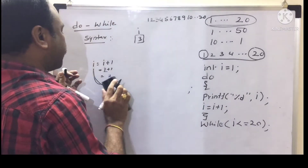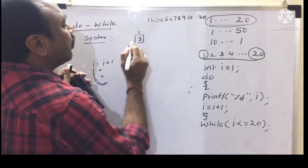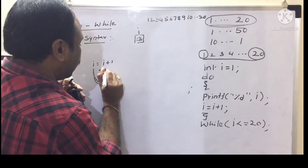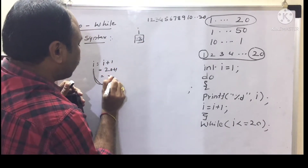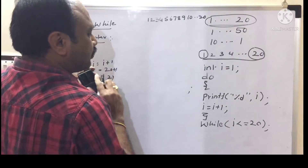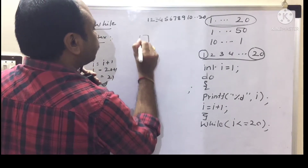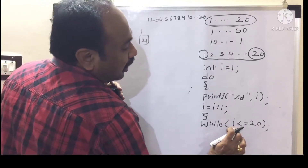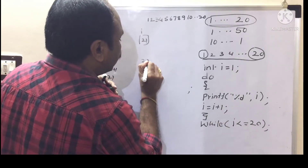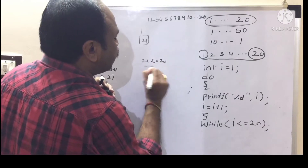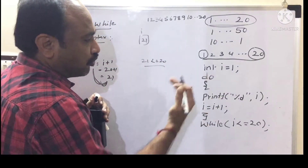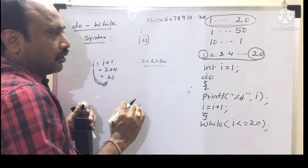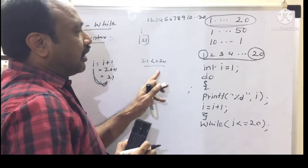After printing 20, i = i + 1 means i was 20, so 20 plus 1 gives i = 21. Now come to while: condition i <= 20. 21 less than 20 — condition false. It will come out. Like this it will print the series.